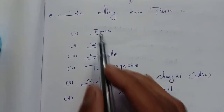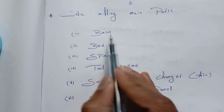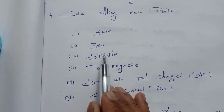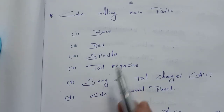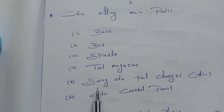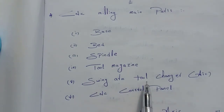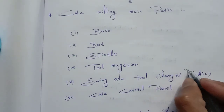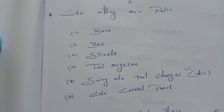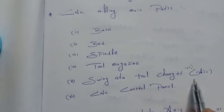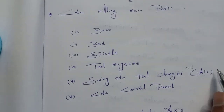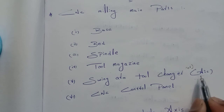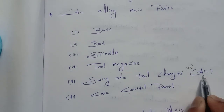First: base, bed, spindle, tool magazine, swing arm, tool changer. ATC means automatic tool changer.